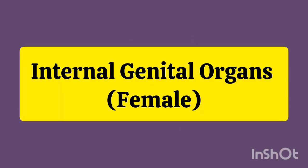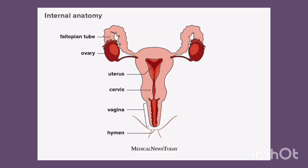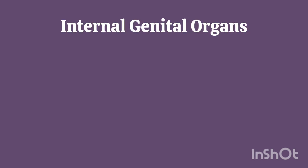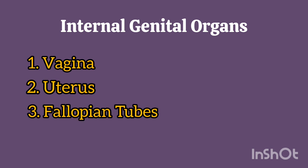Internal Genital Organs (Female): The internal genital organs include the vagina, uterus, fallopian tubes, and ovaries. These are located internally and require special instruments for inspection.